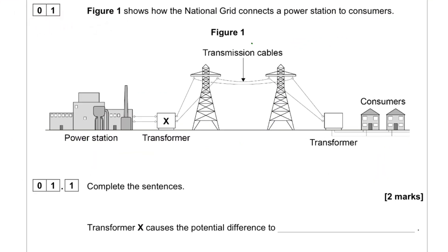Question 1. Figure 1 shows how the national grid connects a power station to consumers. Here is the power station and the transformer. The transformer here will step up the voltage so that higher voltage can be transported and less current is being carried.